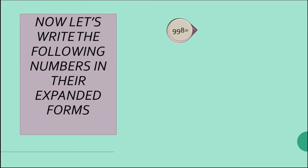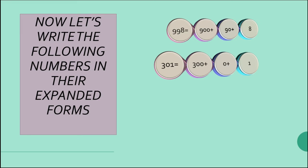Next example: 998. First, from the right-hand side, 8 is in the units place, 9 is in the tens place, and 9 is in the hundreds place. The place value of the hundreds is 900, the tens place value is 90, and the units place value is 8. So the expanded form of 998 is 900 plus 90 plus 8.